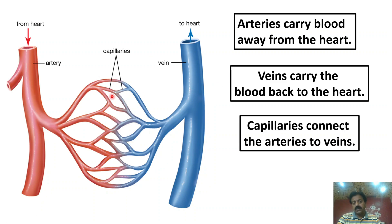Today we had an introductory lecture on transport by special blood circulatory system, and we discussed the general characteristics of the blood circulatory system. In the next lecture, we will study two types of blood circulatory systems: one is the open circulatory system and the other is the closed circulatory system. Thank you dear students, wishing you all the best.